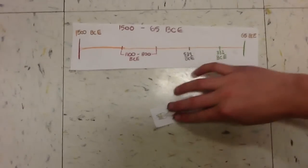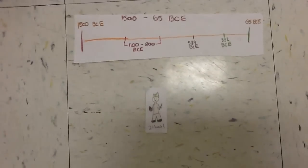The Phoenician Empire lasted from 1500 to 65 BCE. The Phoenicians were led by a very important leader named Ipbal.